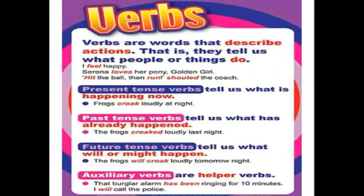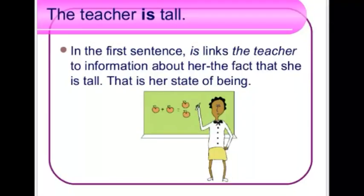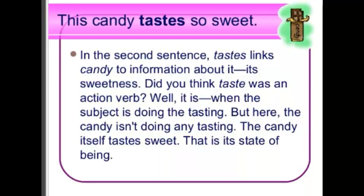State means situation or condition. Let's understand it with an example. 'The teacher is tall.' In this sentence, 'is' links the teacher to information about her — the fact that she is tall. That is her state of being. Now another example: 'This candy tastes so sweet.' Here, 'tastes' links candy to information about it — its sweetness. You might think 'taste' is an action word, and it is when the subject is doing the tasting. But here, the candy isn't doing any tasting — the candy itself tastes sweet. That is its state of being.